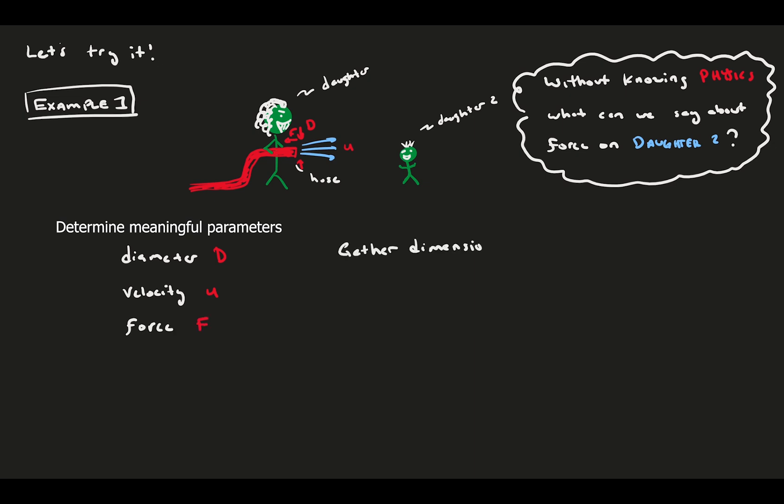The first thing you do with any problem is you gather what you think will be meaningful parameters. First, we have the hose diameter, some average flow velocity, and what we're after is the force exerted on my daughter by the hose. Now, we compare the base dimensions of what we want to solve for, the force, to the other parameters in the problem, like diameter and velocity. And in writing these down, you might notice that we've immediately hit a snag. Force has mass in it as its base dimension, but our two parameters so far only have length and time. This means, no matter what we do, we can't make diameter and velocity give us a force. We need something with mass in it.